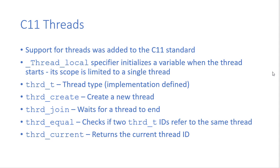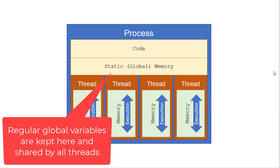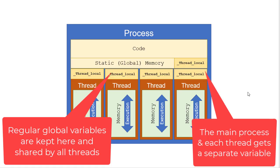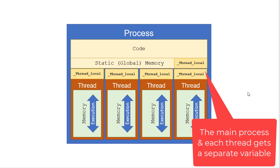The C11 standard added support for threads. There's a specifier we can use when we declare a variable to tell the compiler that this variable has thread local scope. What that means is it's initialized when the thread starts and its scope is limited to just that single thread. Remember, with threads they share a memory space, so if you have a global variable, if it's updated in one thread then that update is visible to all the other threads. The thread local specifier says that even if it's a global variable, its scope is still inside that thread — global only inside that thread, not global to the whole program.